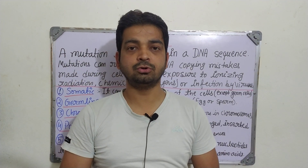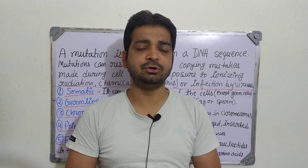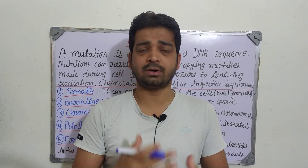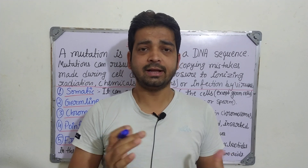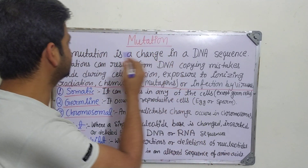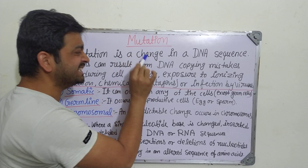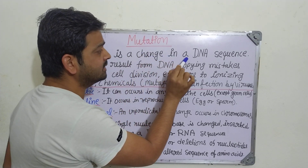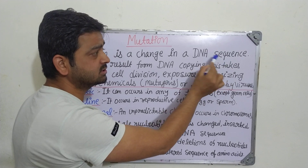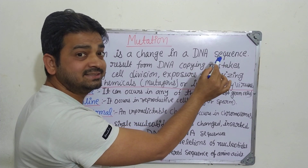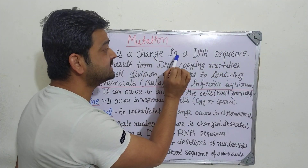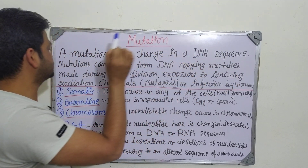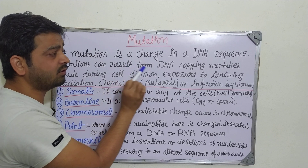Hello students, now we are going to discuss about mutation. As we know, mutation is the sudden changes of the gene. What kind of circumstances and what kind of mutation it is going to have, that we are going to discuss. Mutation is a change in a DNA sequence — ultimately, we can say it is a change in a gene. So changes in a DNA sequence is called a mutation.